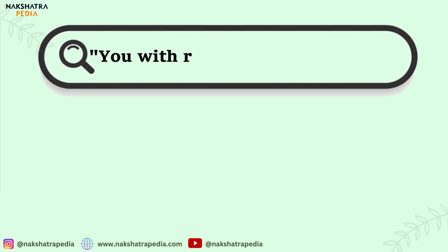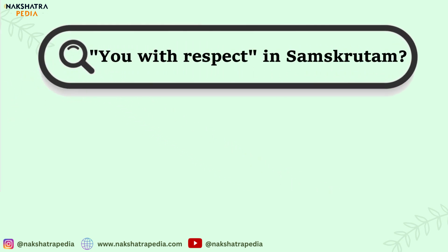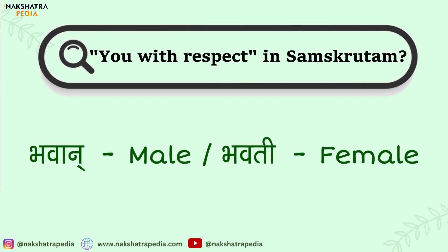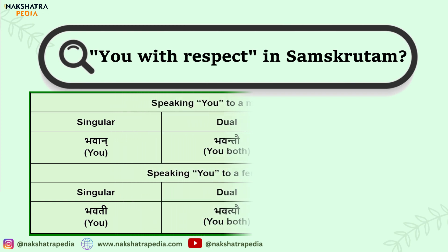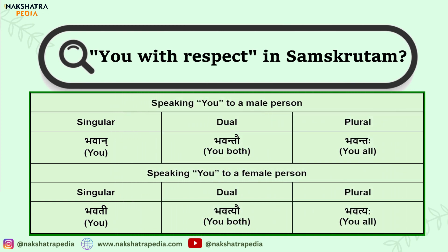When addressing someone with respect or someone who is older, we use bhavaan for male and bhavati for female. Both these forms are for a single person. For dual or plural, here is a quick view: bhavaan, bhavantav, bhavantah — bhavaan is for one person, bhavantav for two, and bhavantah for more than two. Similarly for female gender: bhavati, bhavatyau, and bhavatyah.